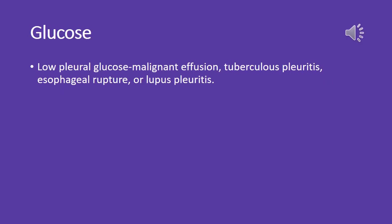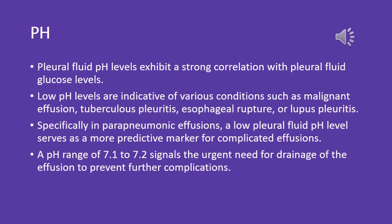Low pleural glucose can be seen in malignant effusions, tuberculous pleuritis, esophageal rupture, and lupus pleuritis. Pleural fluid pH levels exhibit a strong correlation with pleural fluid glucose levels. Low pH levels are indicative of malignant effusion, tuberculous pleuritis, esophageal rupture, or lupus pleuritis. In parapneumonic effusions specifically, a low pleural fluid pH serves as a predictive marker for complicated effusions, and a pH range of 7.1 to 7.2 signals the urgent need for drainage to prevent further complications.